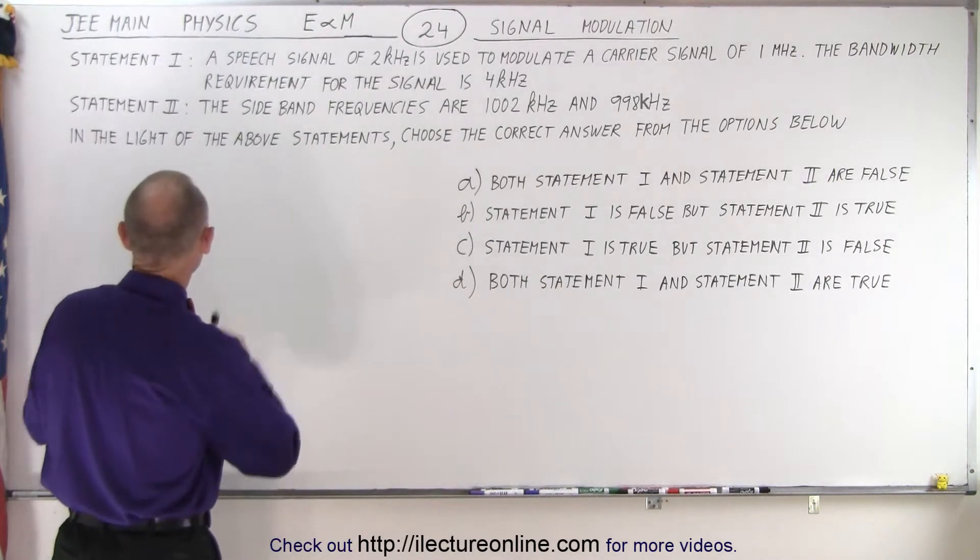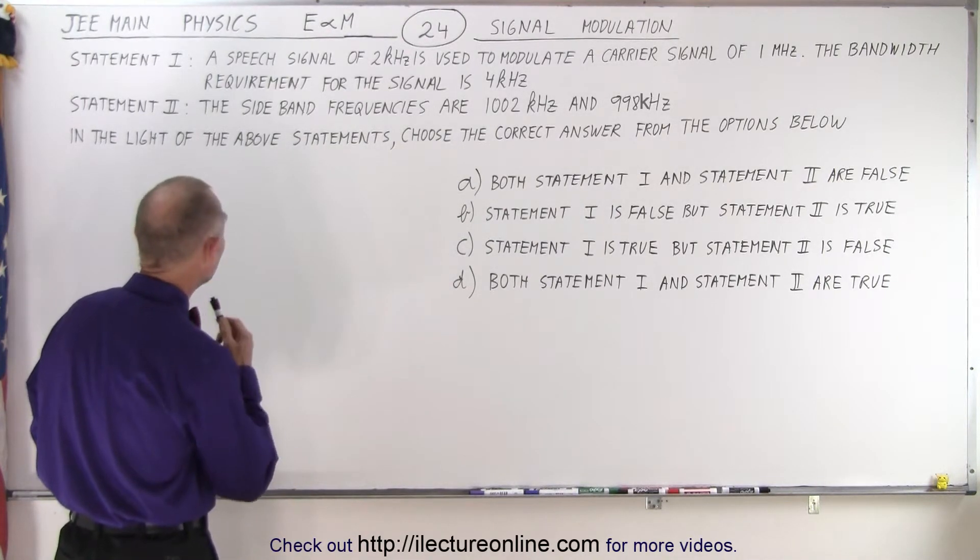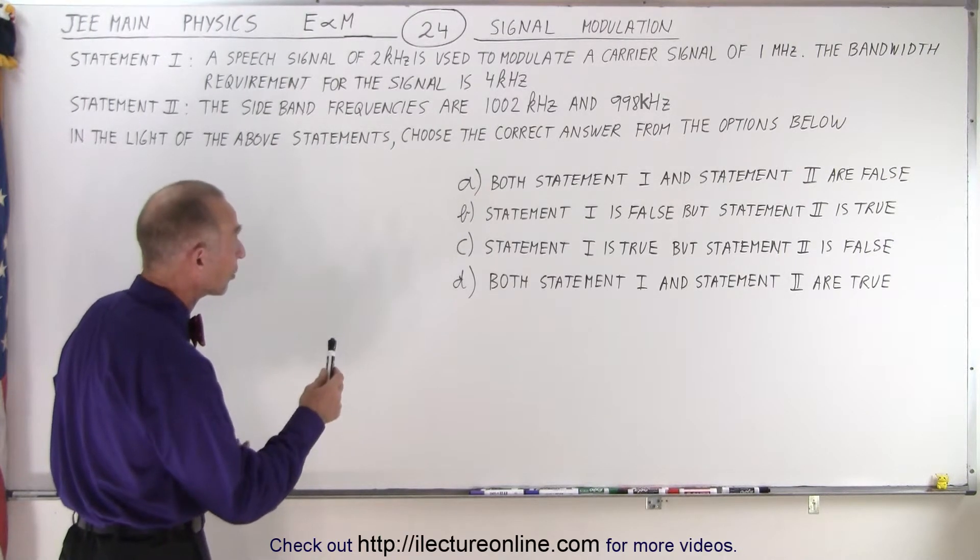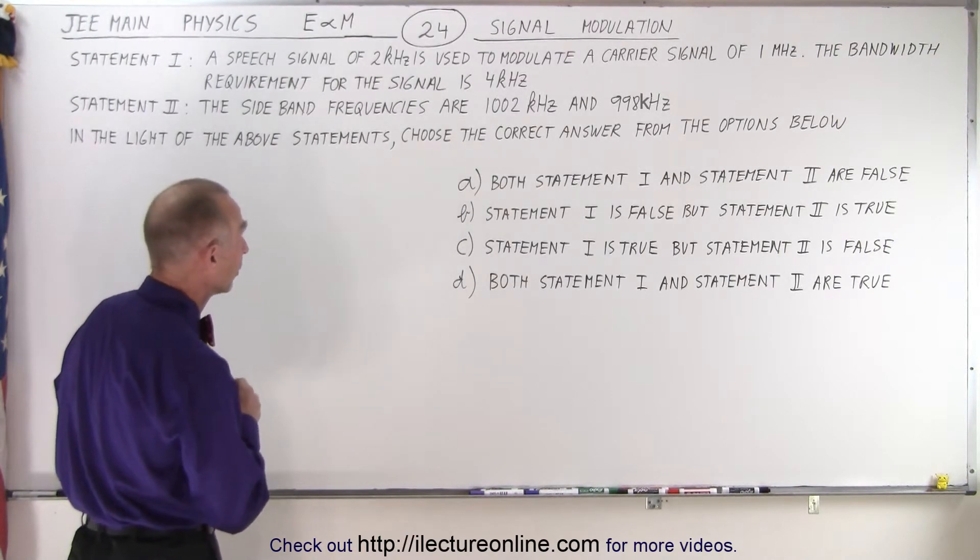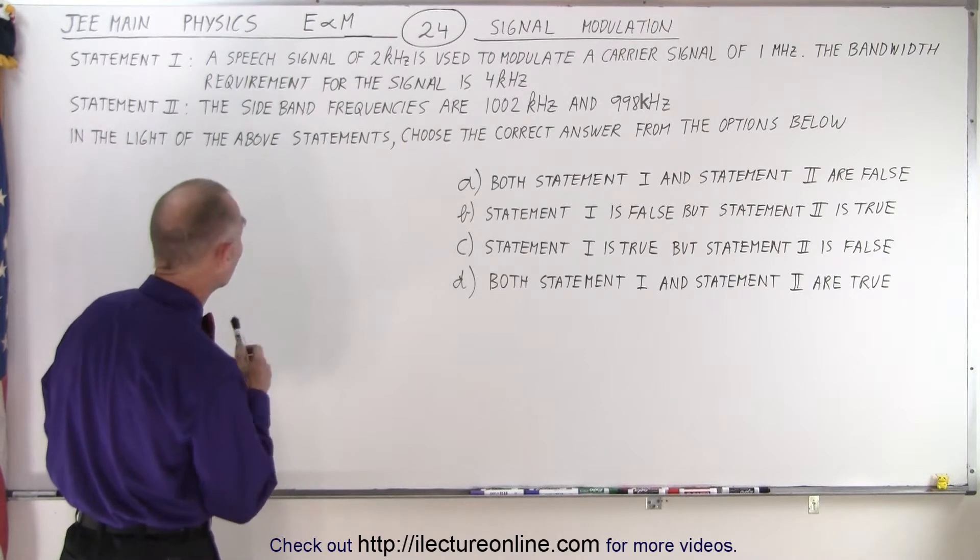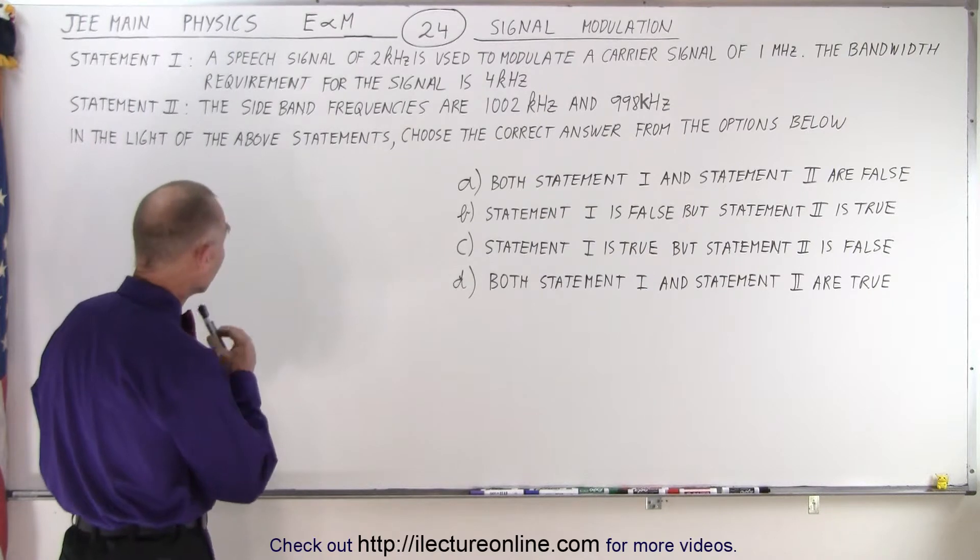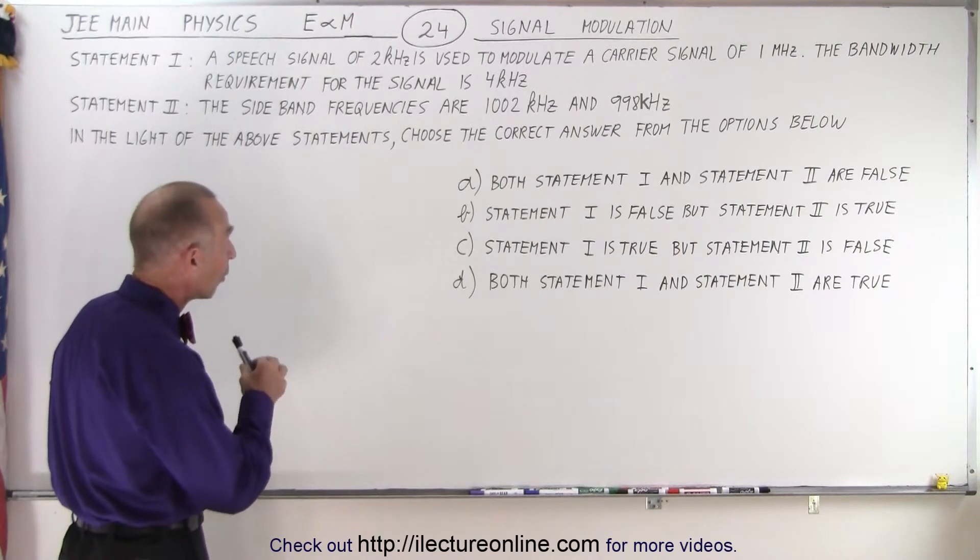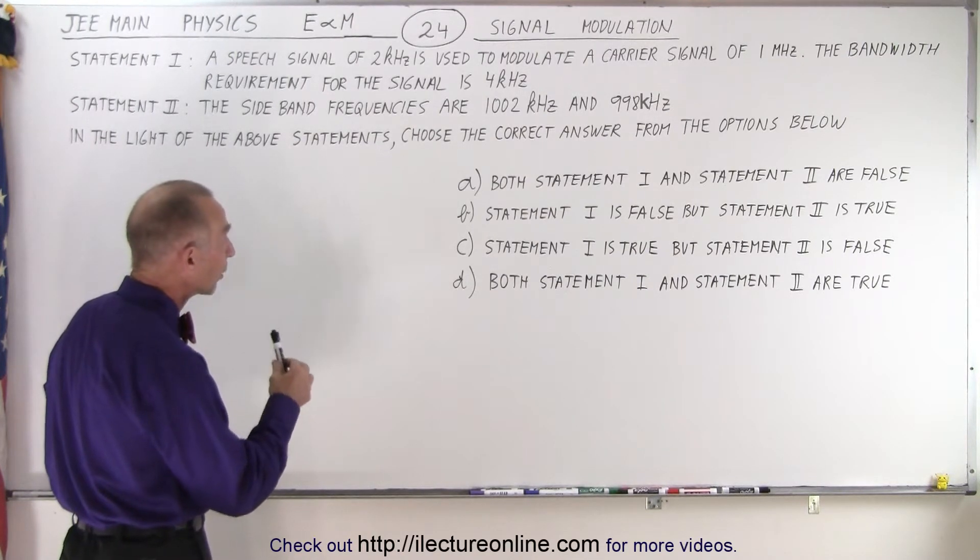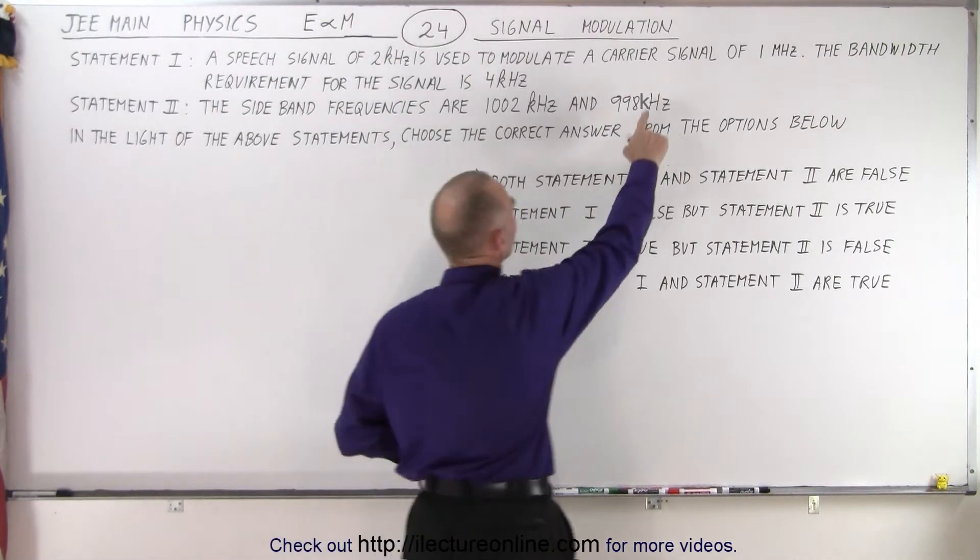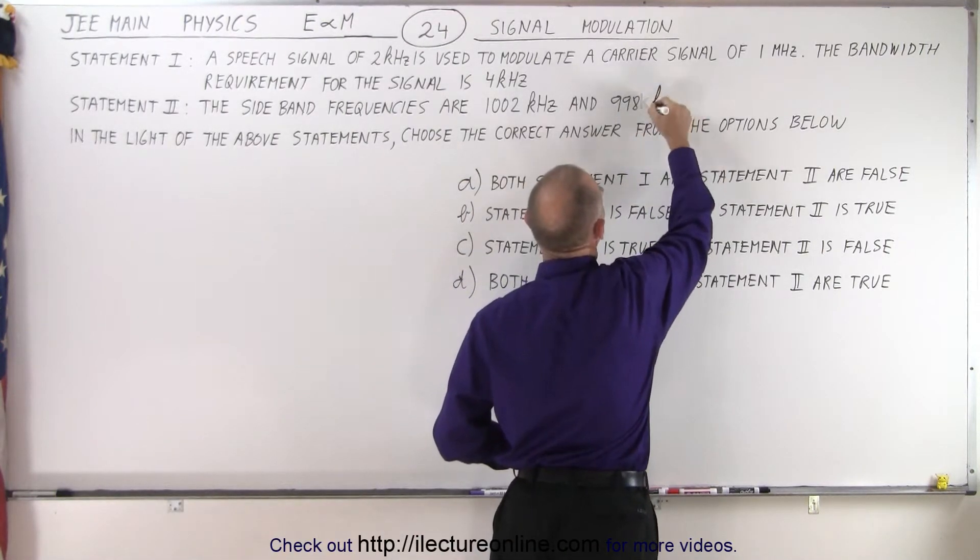So they give us two statements. Statement 1 says a speech signal of 2 kilohertz is used to modulate a carrier signal of 1 megahertz. The bandwidth requirement for the signal is 4 kilohertz. Statement 2 says the sideband frequencies are 1.002 megahertz and 0.998. Oh, this should say kilohertz. So let me correct that.